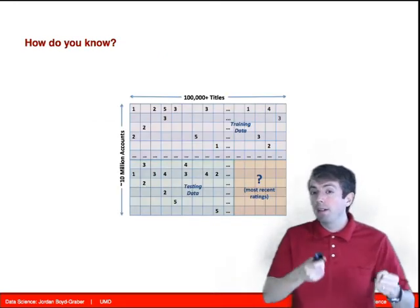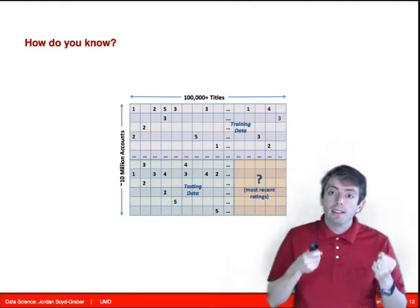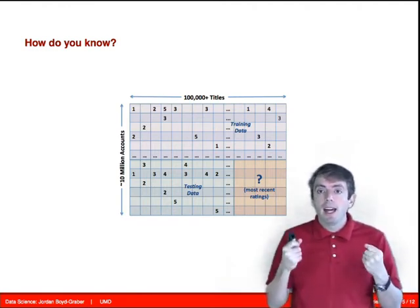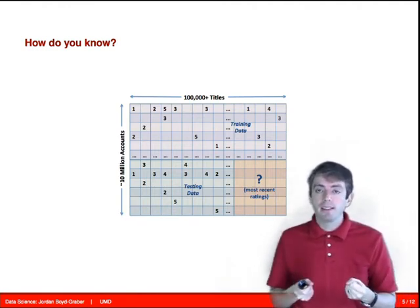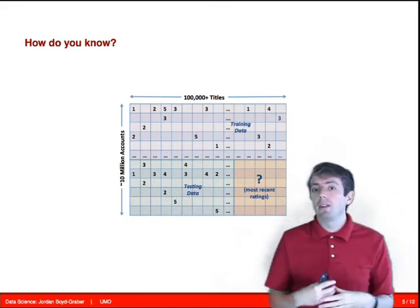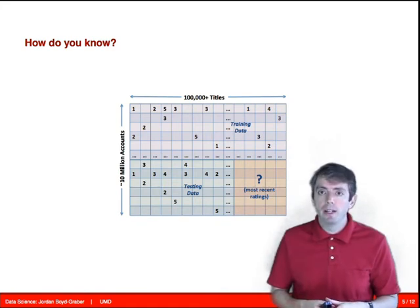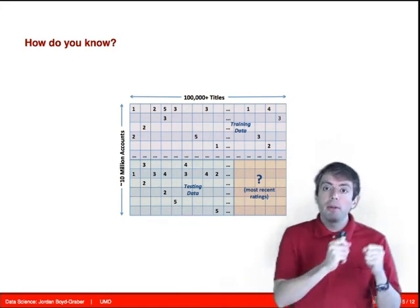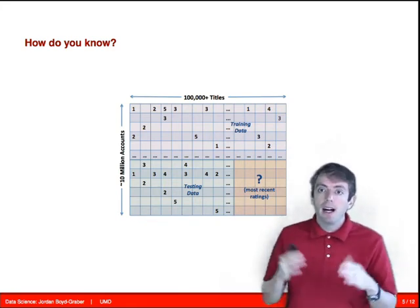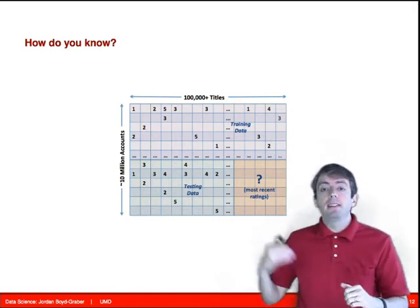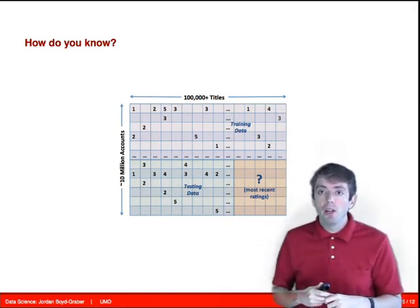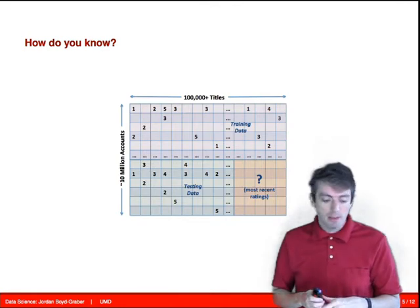We often talk about training data, testing data, and these are very important in data science. Our training data is what we use to build our algorithms. And our testing data is what we use to evaluate our algorithms. On the training data, you have both the X's and the Y's. On the testing data, you have only the X's, and it's your job to try to predict what the Y's are going to be.